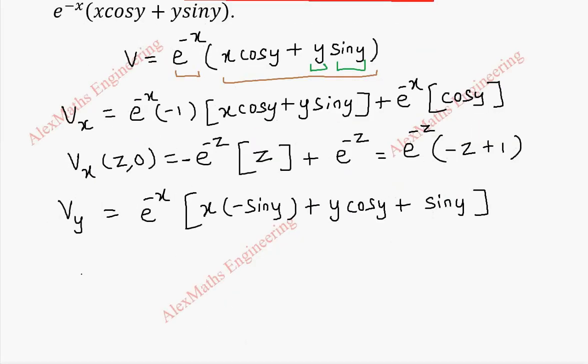Now when we find vy of z, 0, this is e power minus z into sin, sin y is 0. When we replace y as 0 and there is a y so this is 0, everything is 0. So totally this is 0.